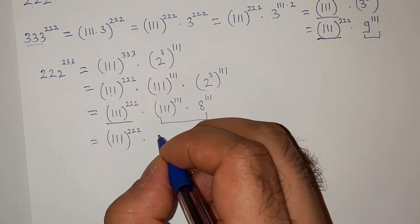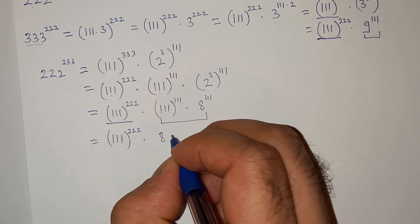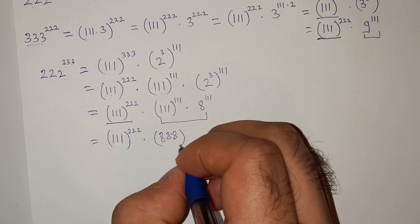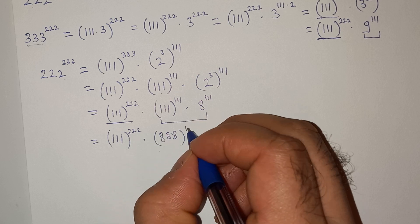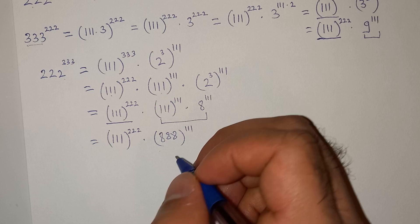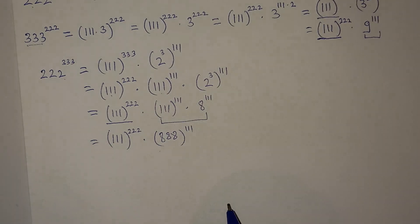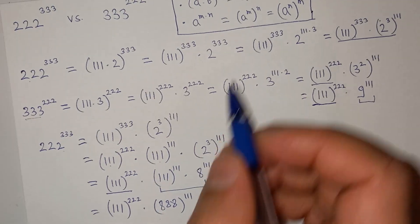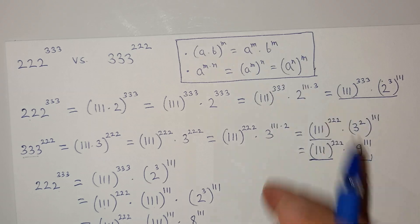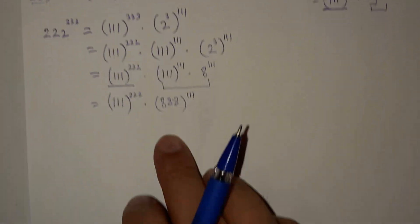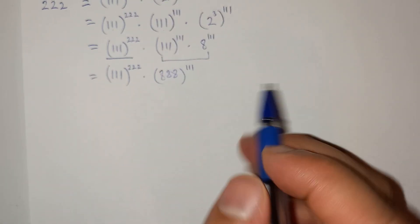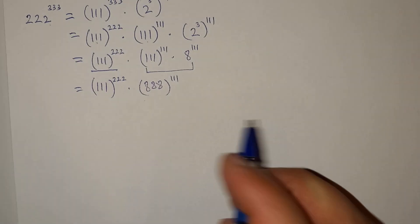So this will be triple 8 power triple 1. Basically this is the exponential rule which I have used here.